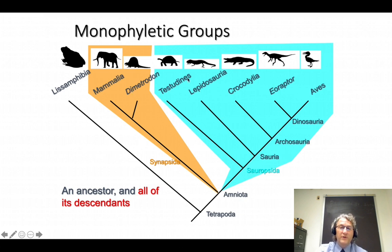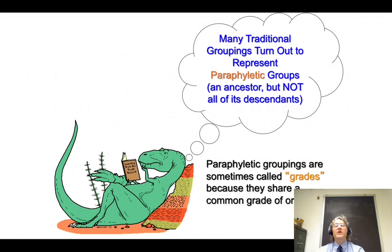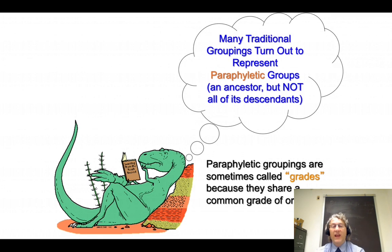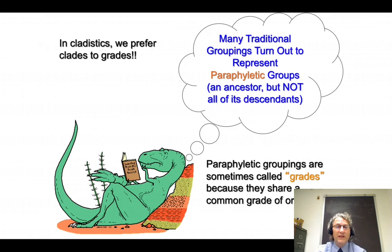Sauropsida is a monophyletic group including Testudinata, Lepidosauria, Crocodilia, Eoraptor, and Aves — or equivalently Archosauria, Lepidosauria, and Testudinata. Because of the shift to using only monophyletic groups, many traditional groupings in older Linnaean systematics turn out to be what we call paraphyletic — an ancestor but not all of its descendants. Paraphyletic groupings are sometimes called grades, because they share a common level of organization, but they don't represent a complete branch and may be positively misleading. In cladistics we prefer clades to grades.